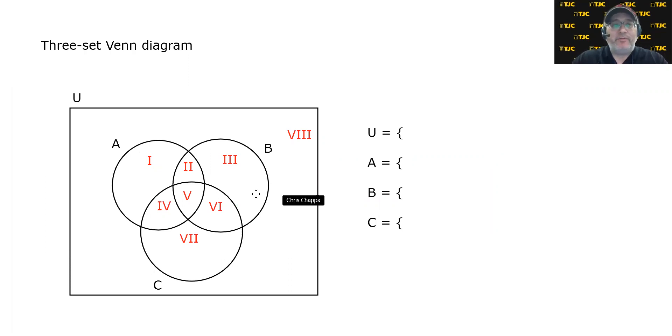And the eight regions labeled from left to right, top to bottom, 1, 2, and 3. Let's do this. There we go. 1, 2, and 3, 4, 5, and 6, 7, and then region 8.